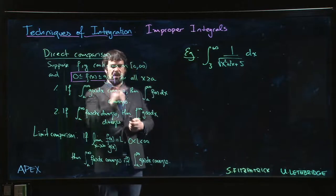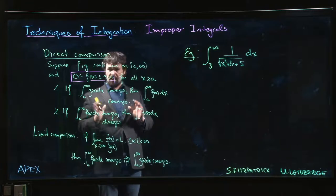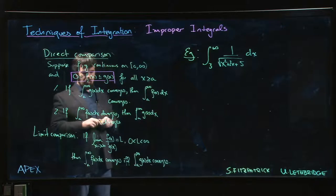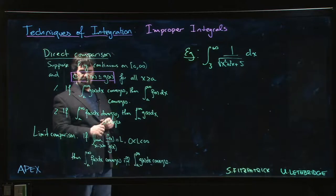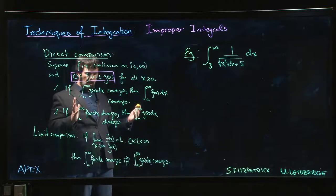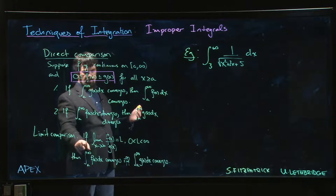But setting up the inequalities that we need to do direct comparison can be a bit of a pain. So one way to work around this is using what's called the limit comparison test. You know what function you want to compare to, you're just not quite sure how to set up the inequalities - well, you do this instead.